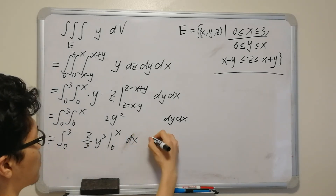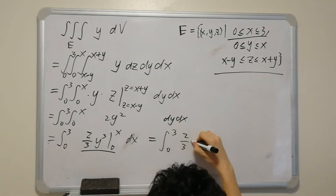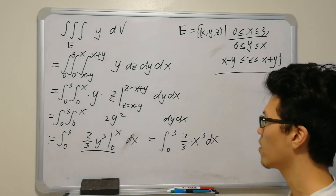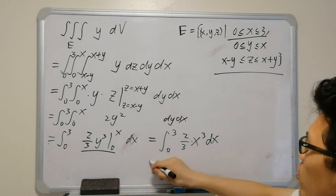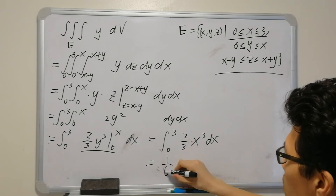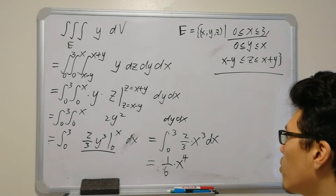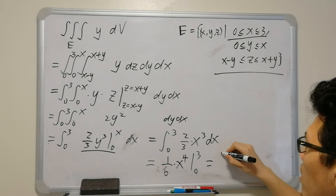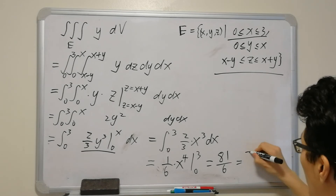Evaluating the y integral: ∫₀ˣ 2y² dy = [⅔y³]₀ˣ = ⅔x³. Then integrating over x: ∫₀³ ⅔x³ dx = [⅙x⁴]₀³ = ⅙·81 = 81/6 = 27/2. So the final answer is 27/2.